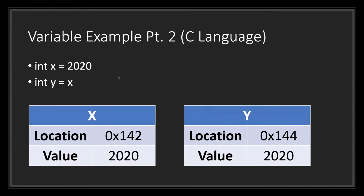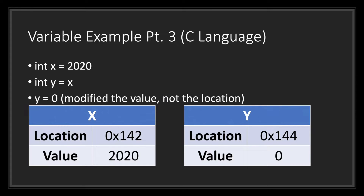Let's create a second integer Y which will equal X. As you can see, X still has the same location and the same value. However, the application has created a new memory address location for Y, while still assigning it the same value as X. Keep in mind that the application has created different location addresses for X and Y, but the values are the same.